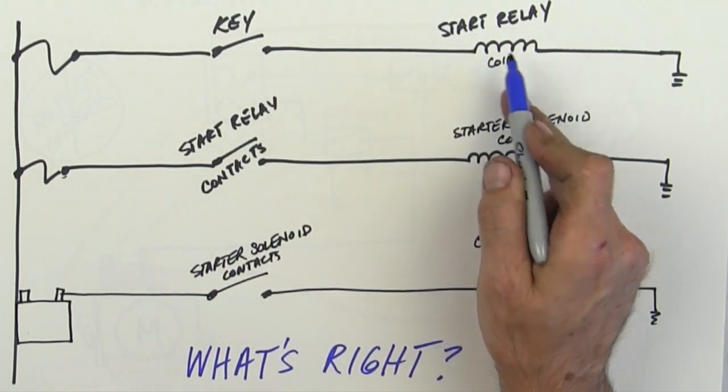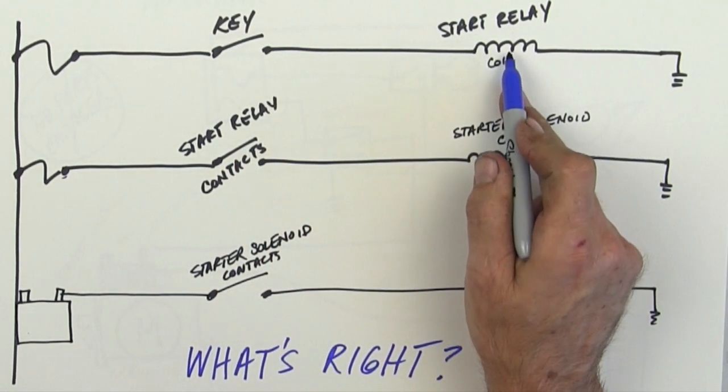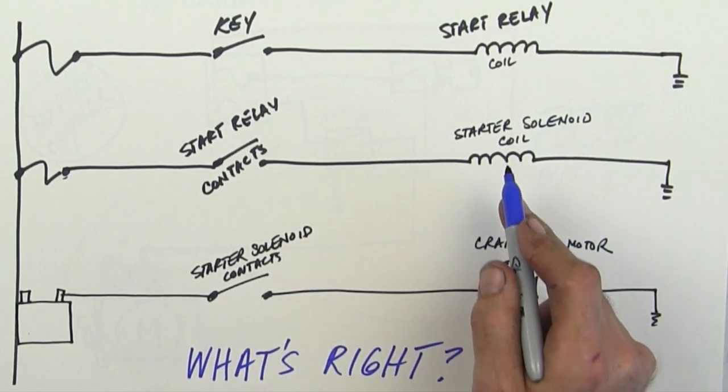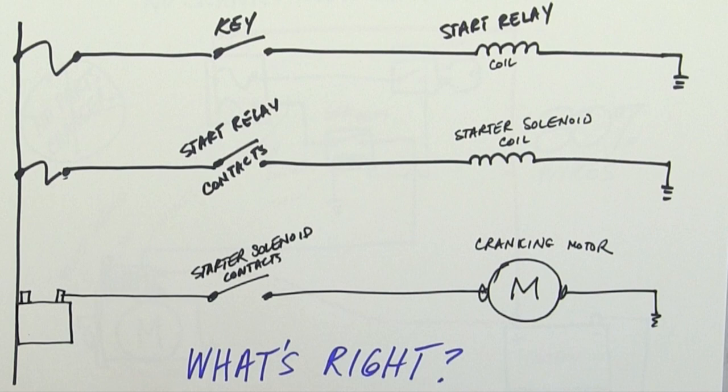So you close the key. Start relay coil energizes. If that works, then those should close. If those close, that should turn on. If that turns on, then those should close. And if those close, that should run.